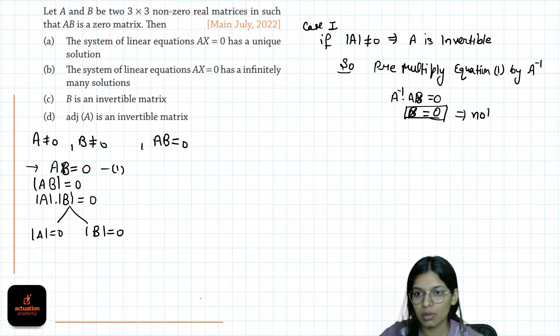B can't be 0 as it is given. So determinant of A has to be 0.